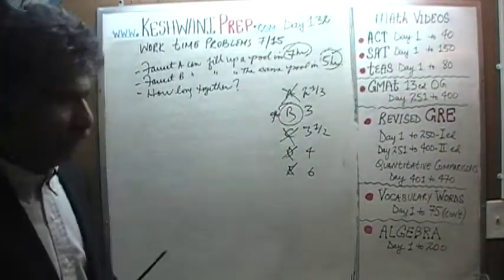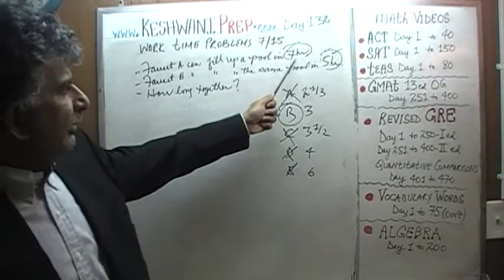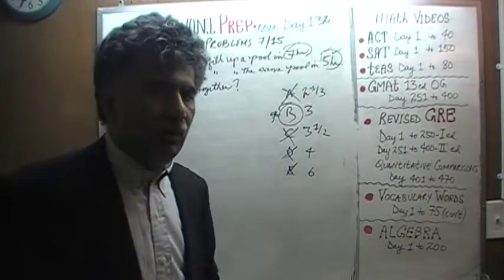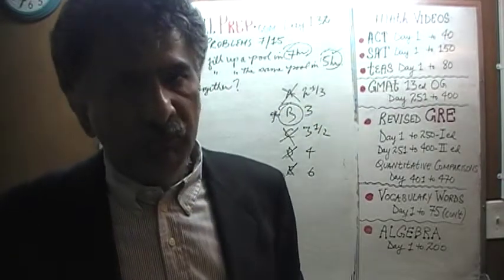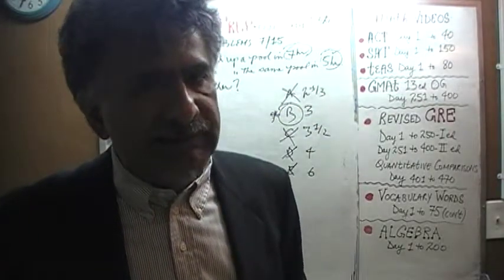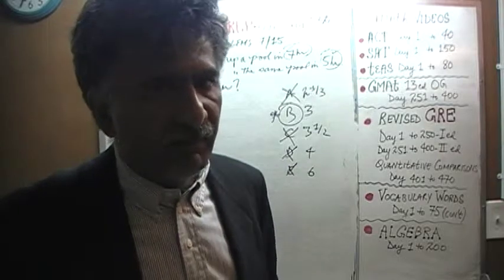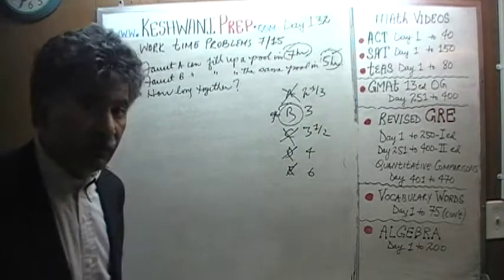Let's do it together if you like, okay? Let's do it together now. 7 hours and 5 hours, we're looking for the smallest number that is a multiple of both 7 and 5. The least common multiple here of 7 and 5 is 35. 35 here is the magic number.